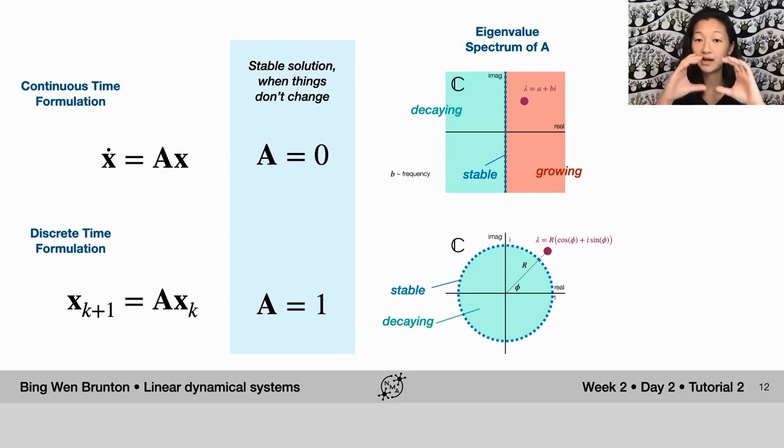Where the unit circle is where the eigenvalue has a radius of 1 and things are totally stable on the unit circle. Everything inside the unit circle is going to be decaying. Everything outside the unit circle is going to be growing.